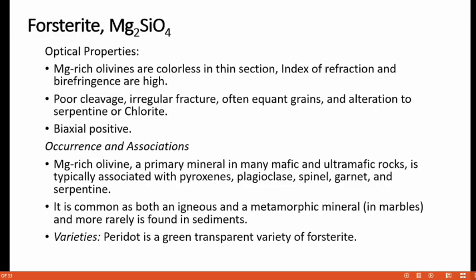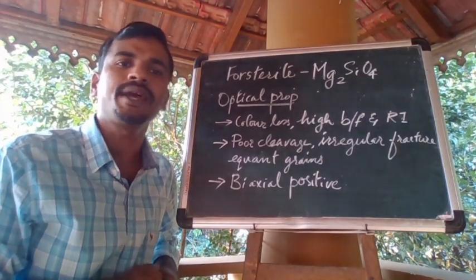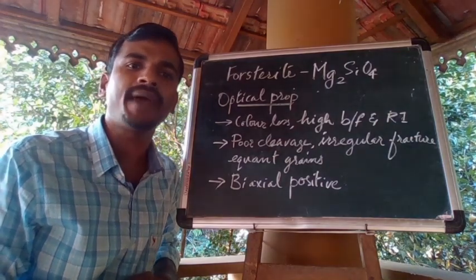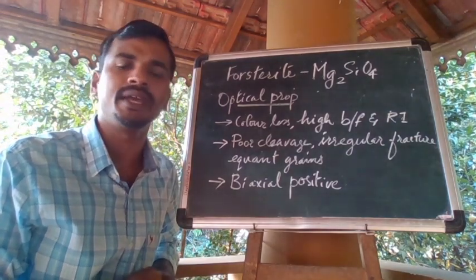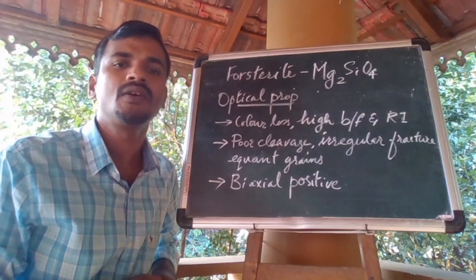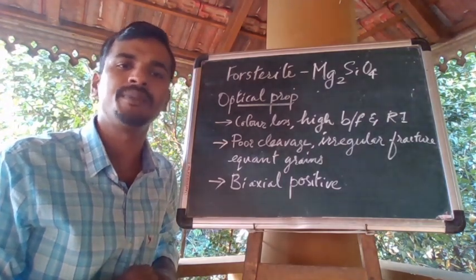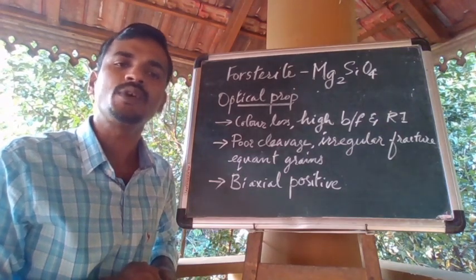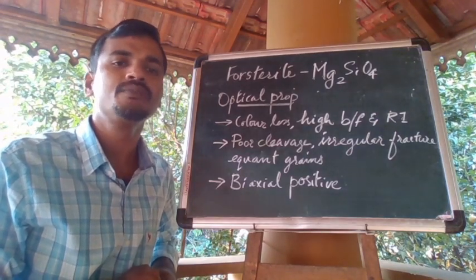When considering the optical properties of olivine, the forsterite — magnesium-rich olivines — are colorless in thin section, showing high refractive index and birefringence. They are also characterized by poor cleavage, irregular fracture, and equant grain appearance. Forsterite is often altered to serpentine, which is helpful in its identification. Forsterite minerals are biaxially positive.